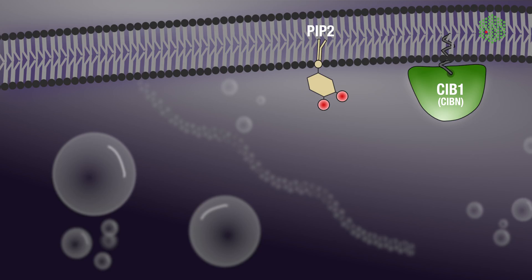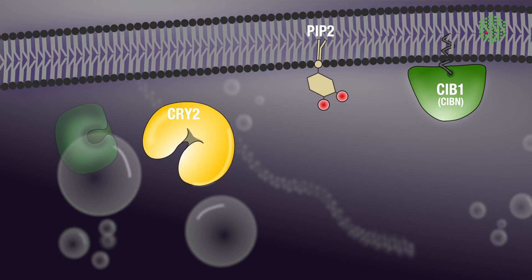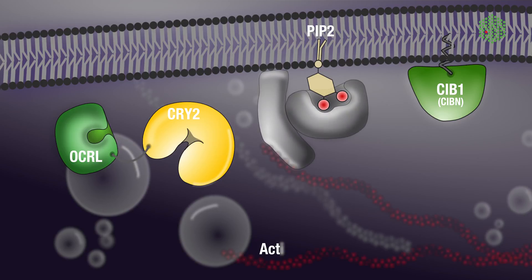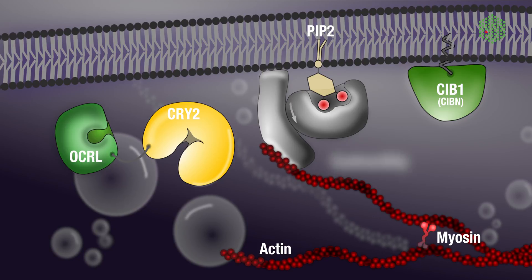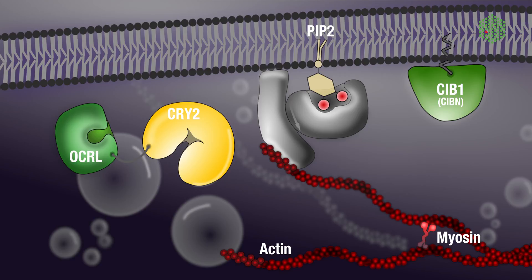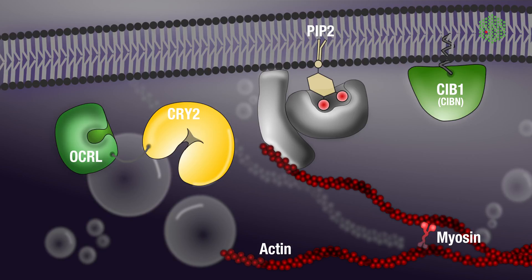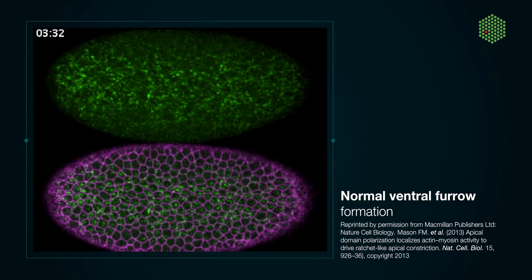In the optogenetic system developed in our lab, CIBN is anchored at the plasma membrane and Cry2 is fused to the catalytic domain of a phosphatase called OCL. In the dark, meaning in the absence of blue light illumination, OCL and Cry2 are cytoplasmic and the embryo develops normally. If you are using the Cry2-CIBN system or any other optogenetic technique, it is essential to define the dark state activity of your system and to control for potential effects in the absence of light. In our lab, we are interested in the process of ventral furrow formation, which is a well-established model system for tissue invagination.